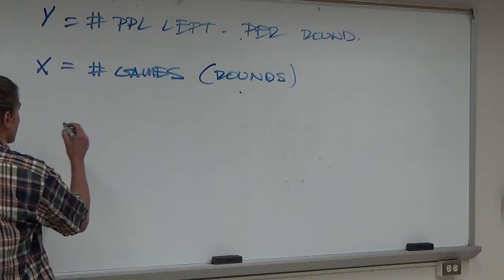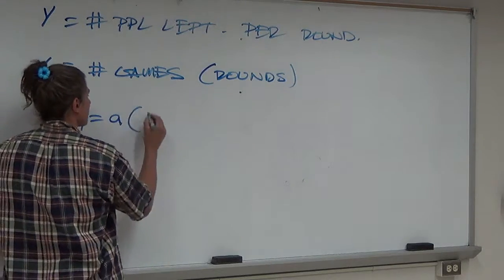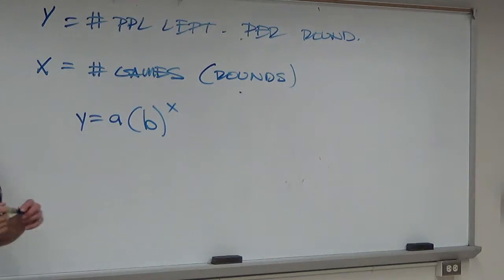We know the model has to look like this. Y equals A times B to the X. And we have to stick in what A and B are. We've been talking about that all day, right, what A and B are.